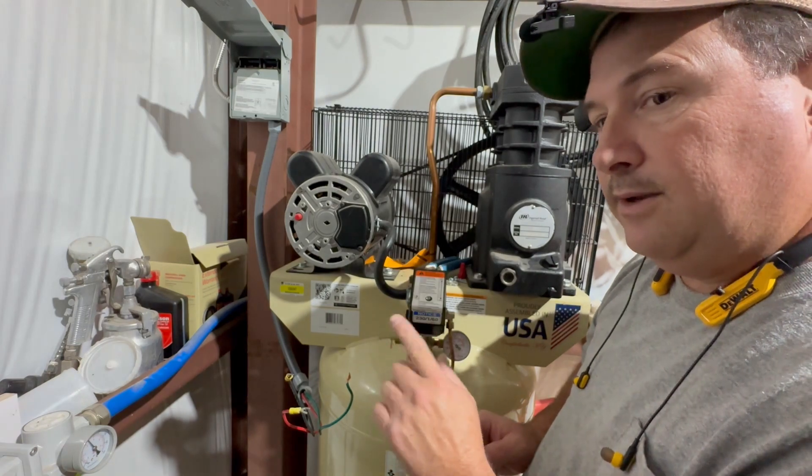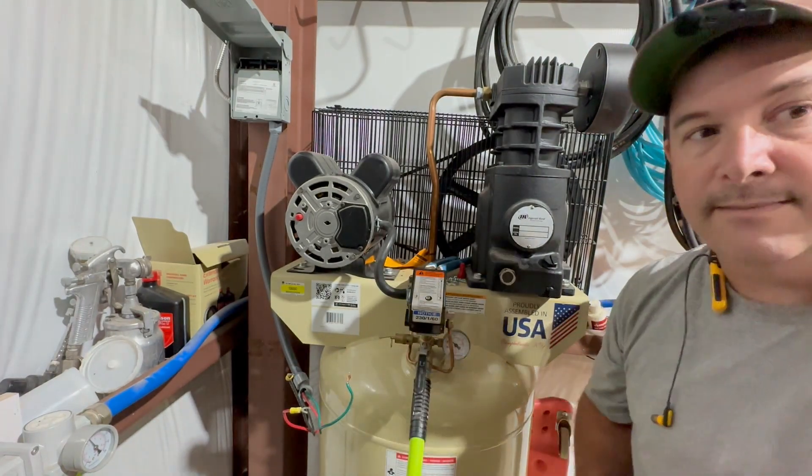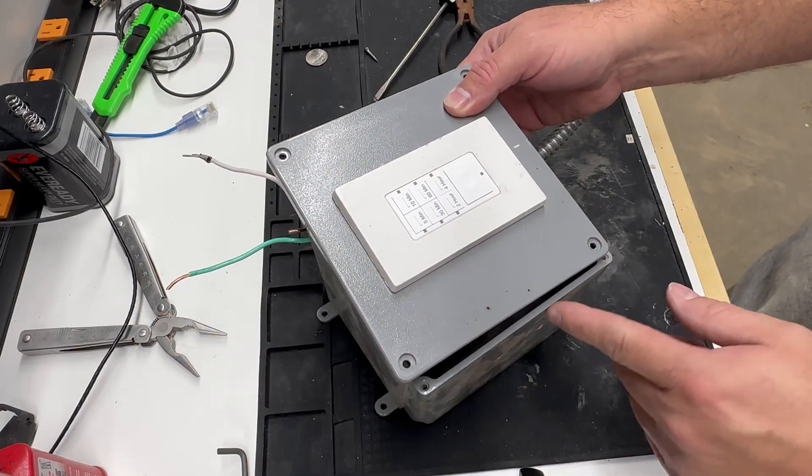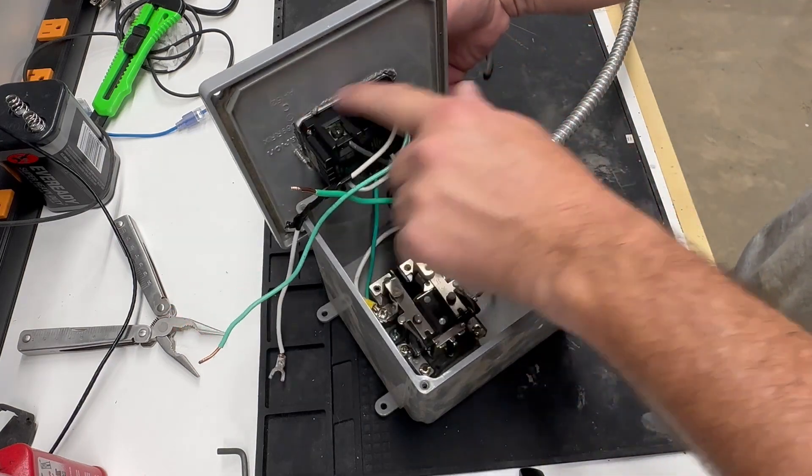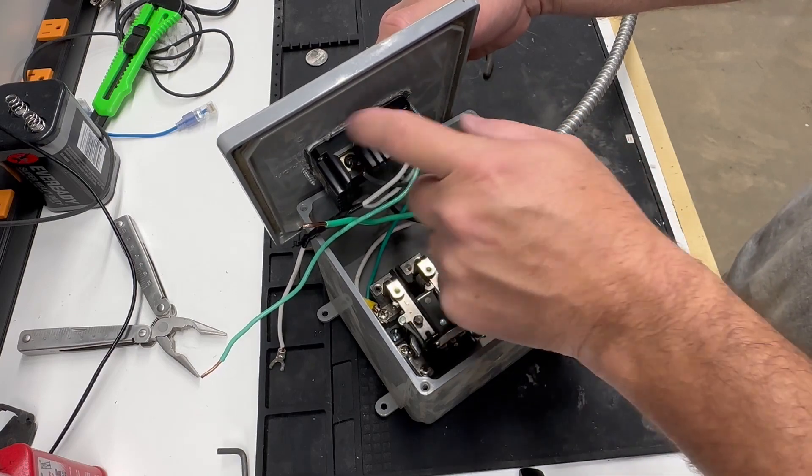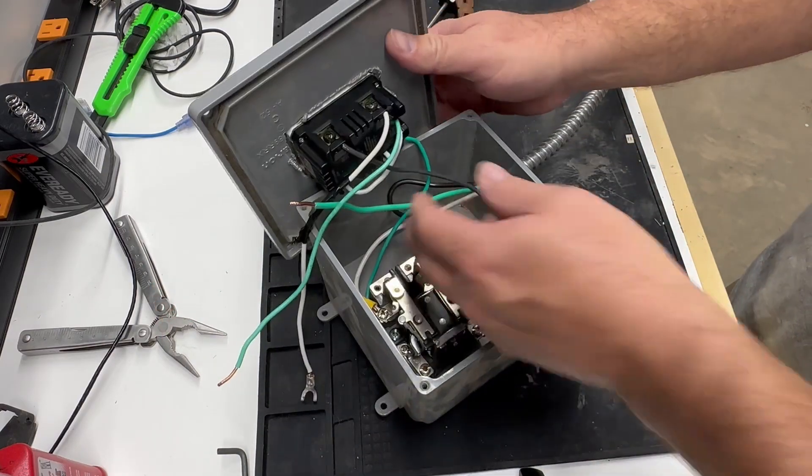So I disconnected the source wires from here and I'm going to build a relay system that will allow me to use a timer to turn that off and on. So let me show you how that's done. I'm not going to bore you with the details.